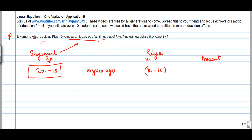So whatever his age was ten years ago which is 2X minus 10, this was equal to four times Rhea's age. So four times what was Rhea's age at that point in time? Her age was X minus 10.